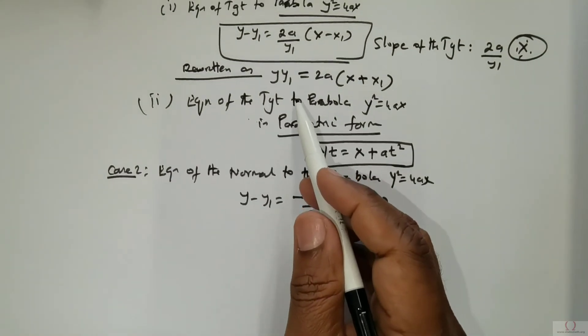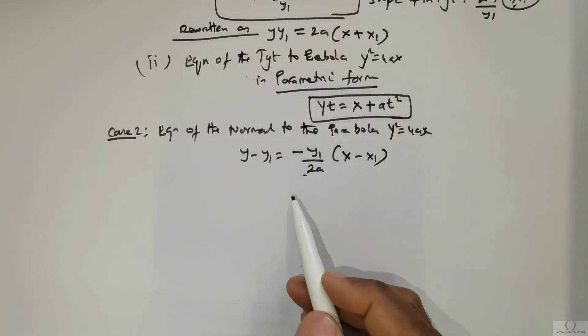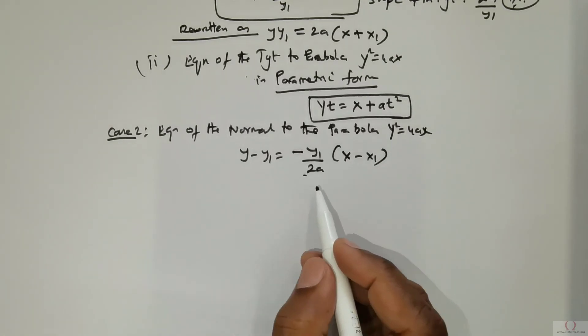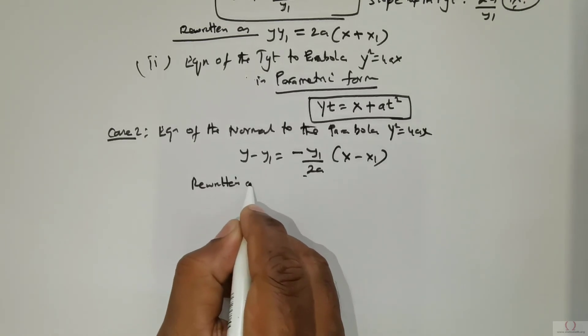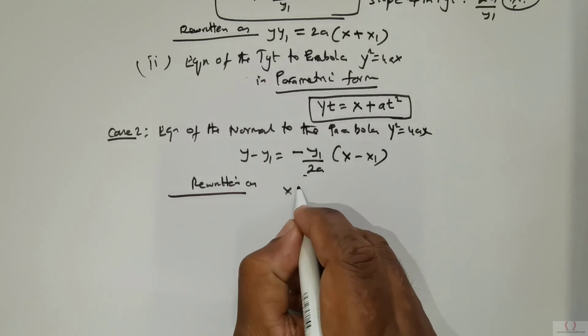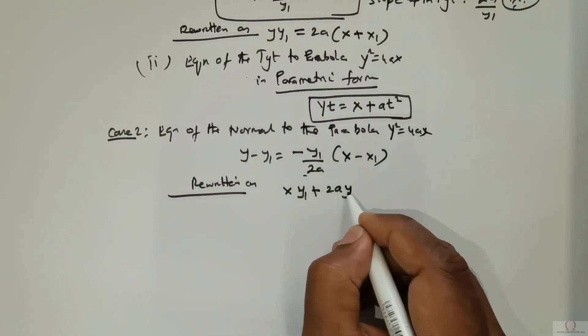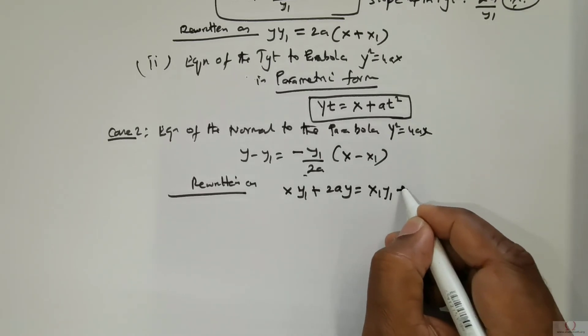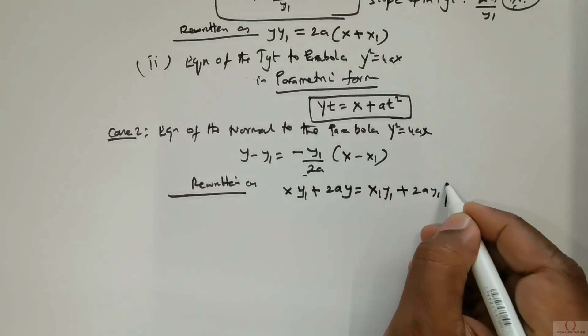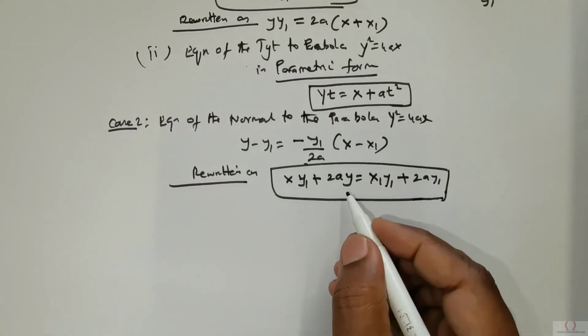It's just a reverse. The tangent had slope 2a/y₁, so the normal has slope -y₁/2a with the negative sign. That is critical. Now if you rewrite this, it becomes xy₁ + 2ay = x₁y₁ + 2ay₁. This is the rewritten form.